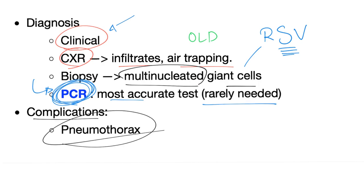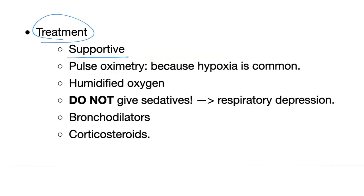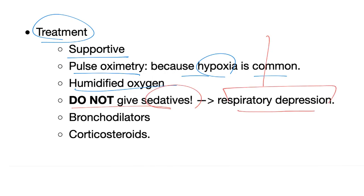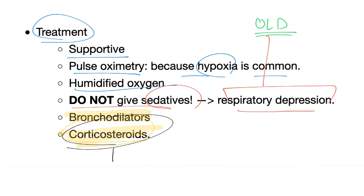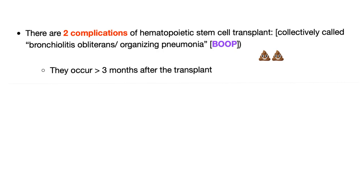Complications: it can lead to pneumothorax. How to treat acute bronchiolitis? Supportive care — pulse oximetry to monitor hypoxia, and humidified oxygen. Do not give sedatives, because they can lead to respiratory depression in a patient who already has obstructive lung disease. You can give bronchodilators or corticosteroids. When in doubt, give steroids — these drugs work like magic, but everything has pros and cons, especially long-term side effects. As Dr. Thomas Sowell said, there are no solutions in life, only trade-offs.